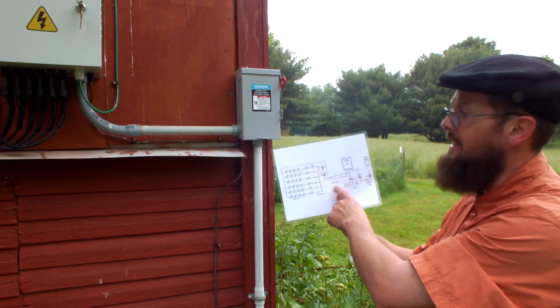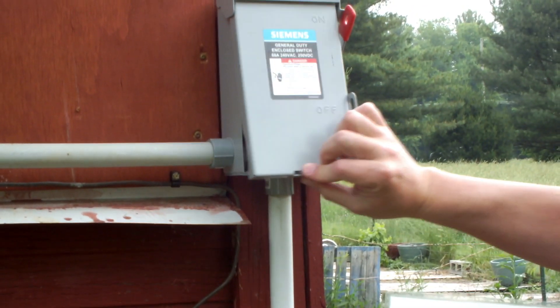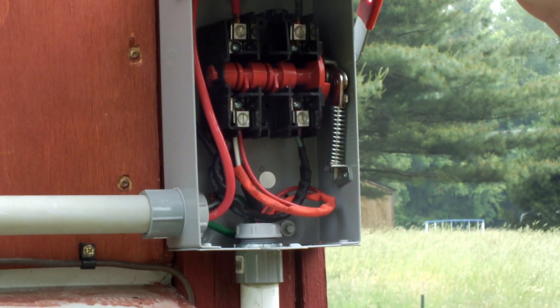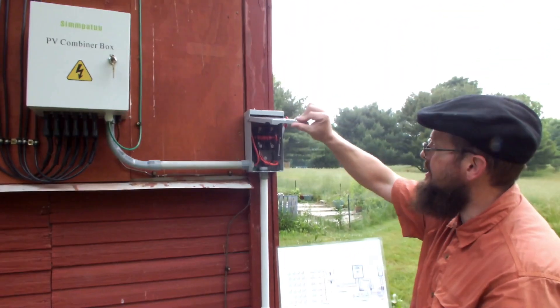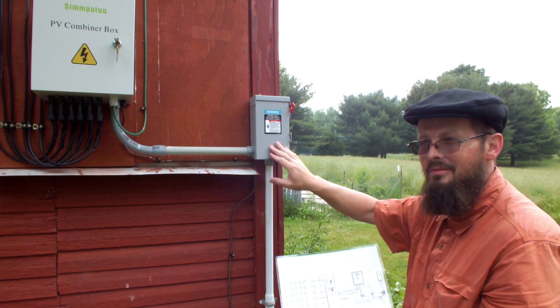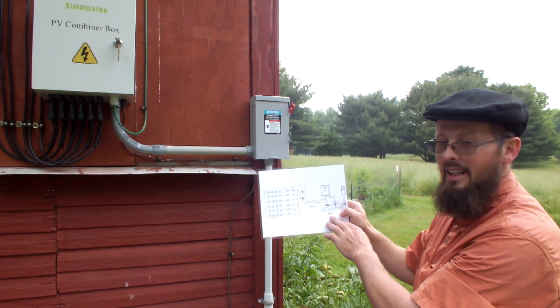Here we have a very common for the array disconnect, a 60 amp outdoor Siemens 250 volt DC non-fused, and I had extra number 12 THHN so I paralleled a circuit on over to the outhouse. This is code. Don't install a bigger array without one of these. So then we'll go to the outhouse.